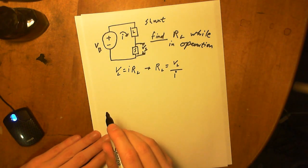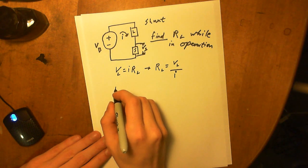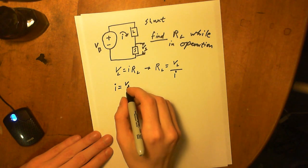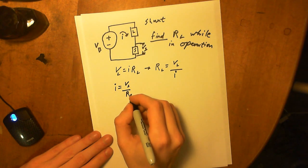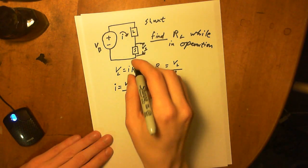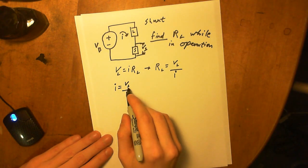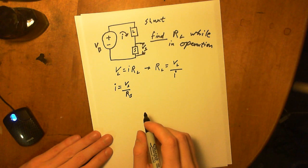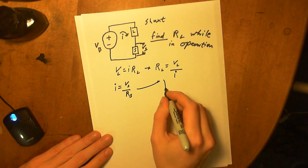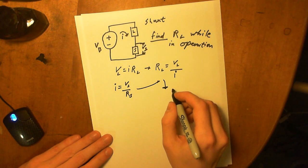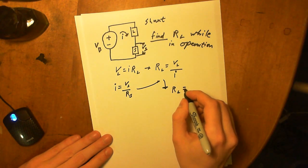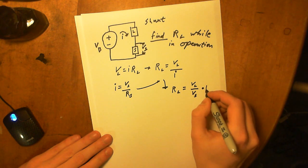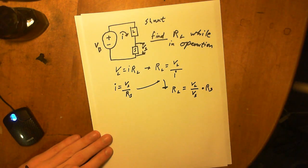We're going to place our voltmeter across the shunt to measure V_S. We can say the current equals the voltage of the shunt over the resistance of the shunt. The shunt is placed in series with the circuit — we can measure its voltage with a voltmeter and we know its resistance beforehand. Substituting, we get: resistance of the load equals voltage of the load over the shunt voltage, times the resistance of the shunt.